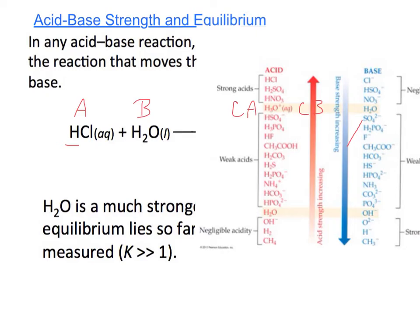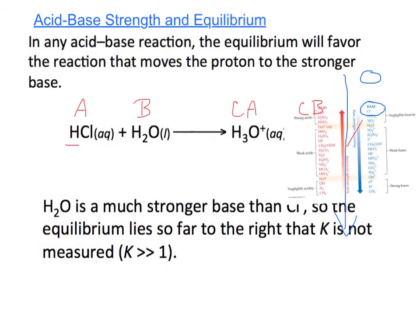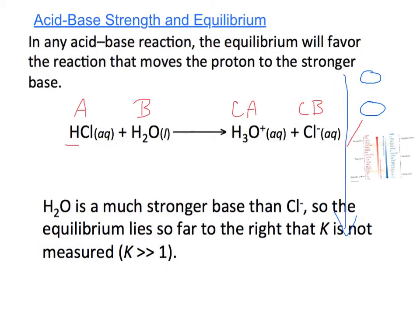I have Cl minus here as my conjugate base and I have H2O here. According to this chart, H2O is a stronger base because we increase in base strength as we go down this column. Since H2O is a stronger base, then that means the reaction that H2O is in is going to be favored. So the forward reaction is favored since H2O is a stronger base than Cl minus.